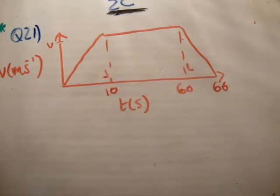The time taken is 66 seconds, the first 10 seconds it is Uniform Acceleration A1, then travels at constant speed and is finally brought to rest by Uniform Deceleration A2 acting for 6 seconds. Calculate the accelerations.